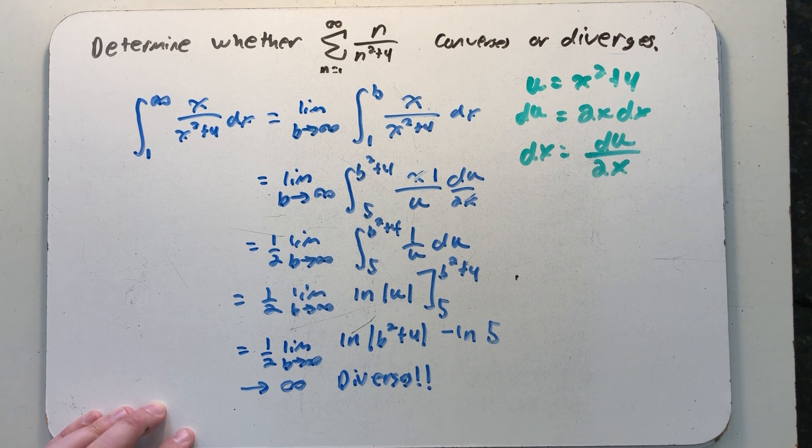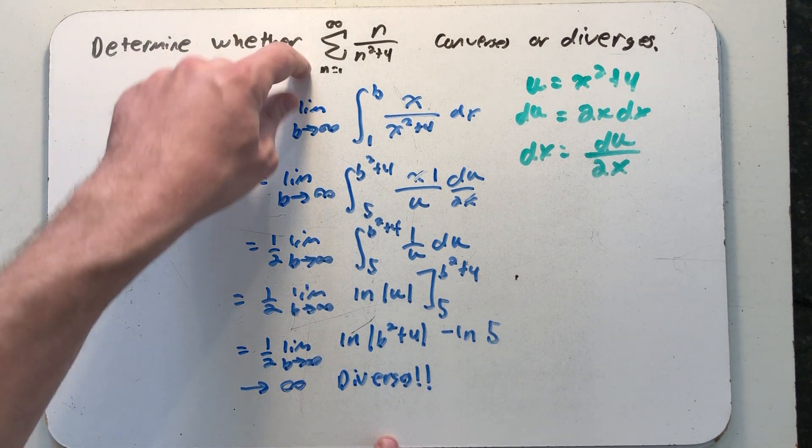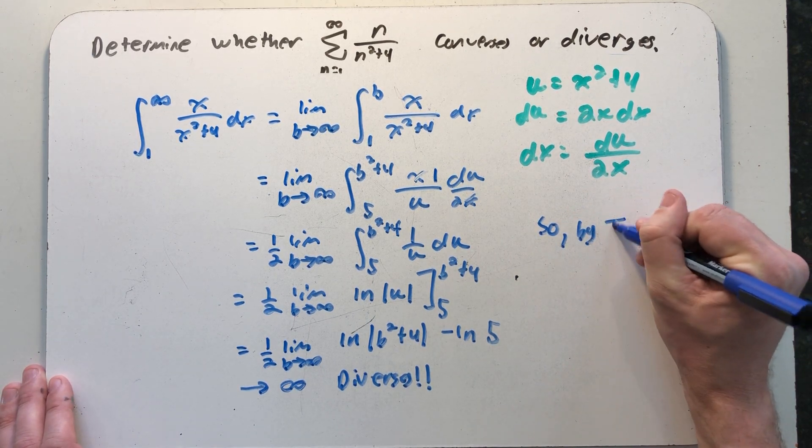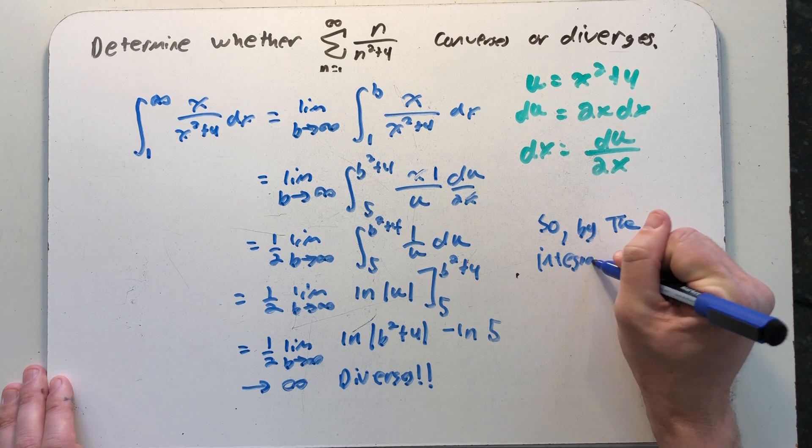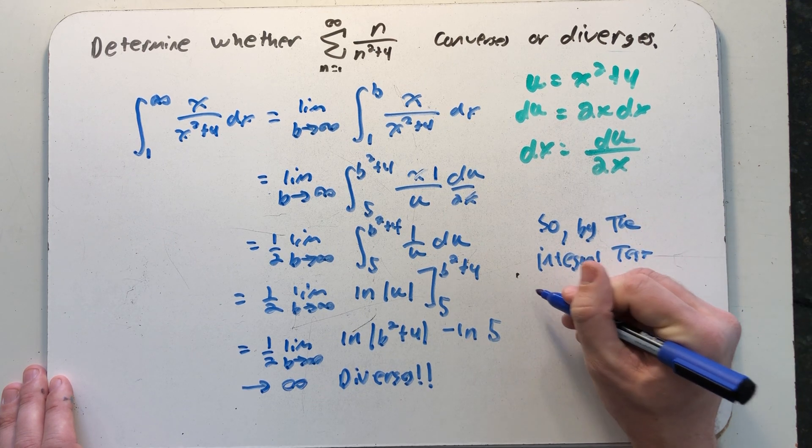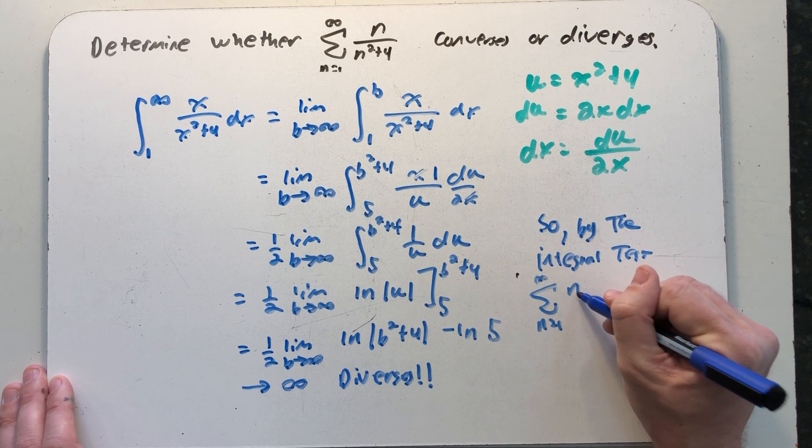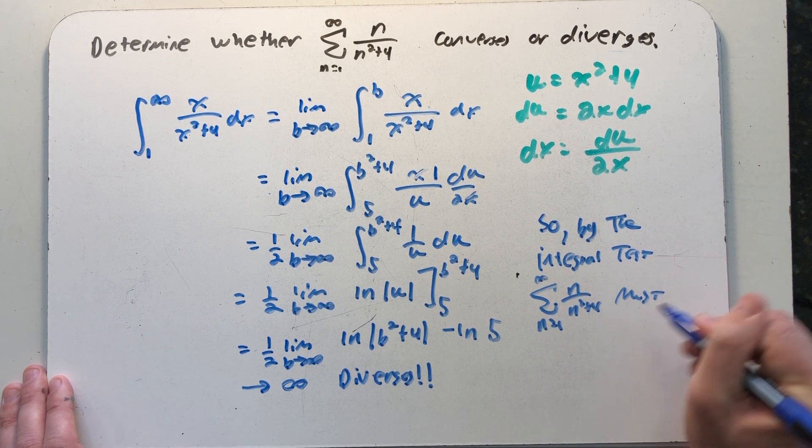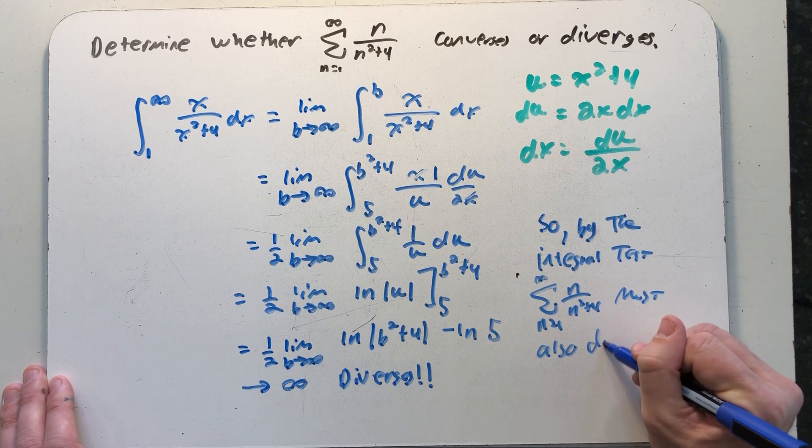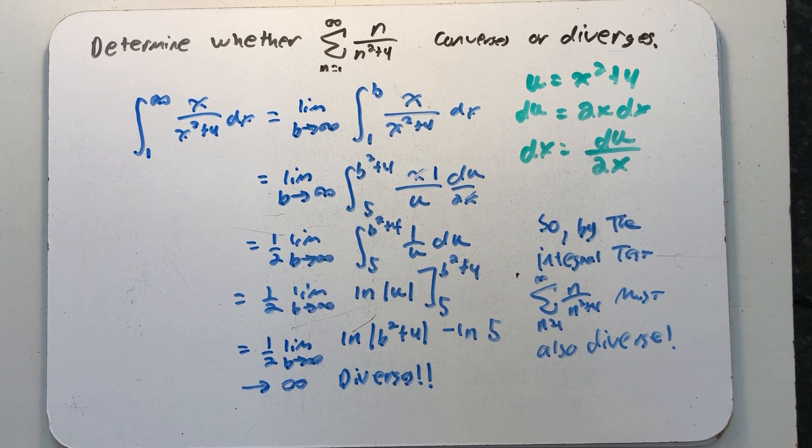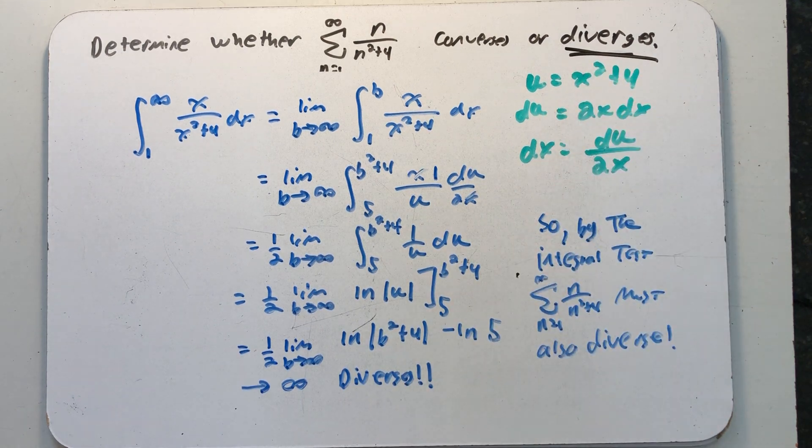The integral test lets me conclude that this improper integral and this series have the same behavior. So by the integral test, the series that is the sum from 1 to infinity of n over n squared plus 4 must also diverge. All right, so that kind of finishes off what we set out to do here, to prove that this is a divergent series or a series I now know diverges using the integral test. But I did promise that I'd take a look at it using one of our other tests.